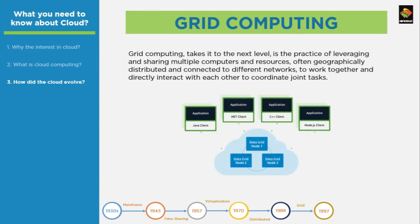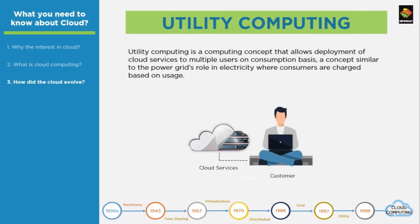Grid computing, a concept introduced in 1997, took technology models to the next level. It carried forward from distributed computing but on a much larger and dispersed network, where every participating computing resource coordinates via a common installed application that acts like a grid manager. The grid manager receives, breaks, allocates, consolidates, and returns the final output for a given complex task. Finally, utility computing allows the deployment of cloud computing as services to multiple users on a consumption basis, similar to the power grid's role in electricity, where consumers are charged based on usage — also called pay-as-you-go or pay-per-use.